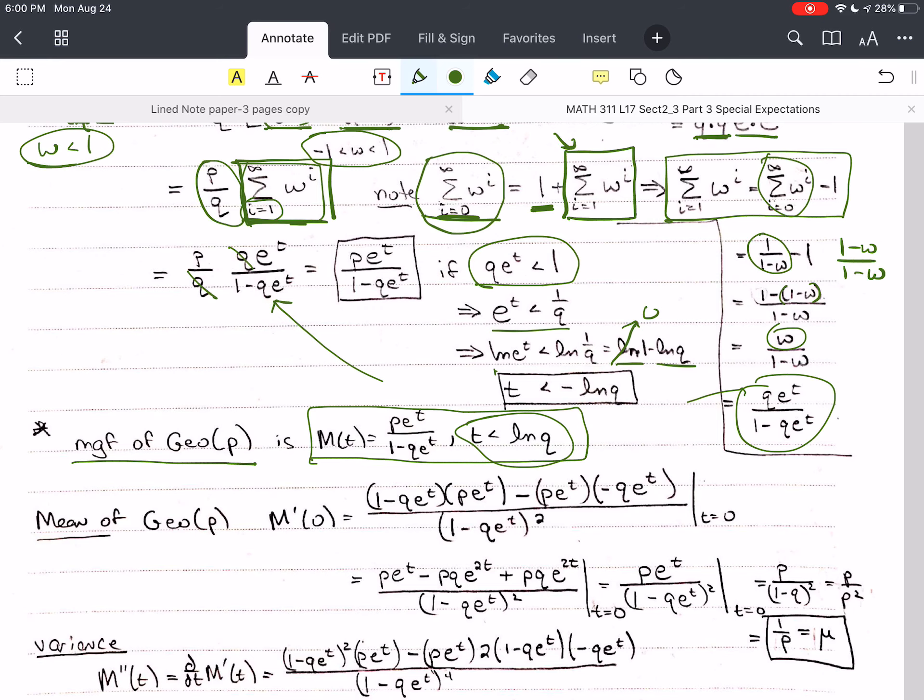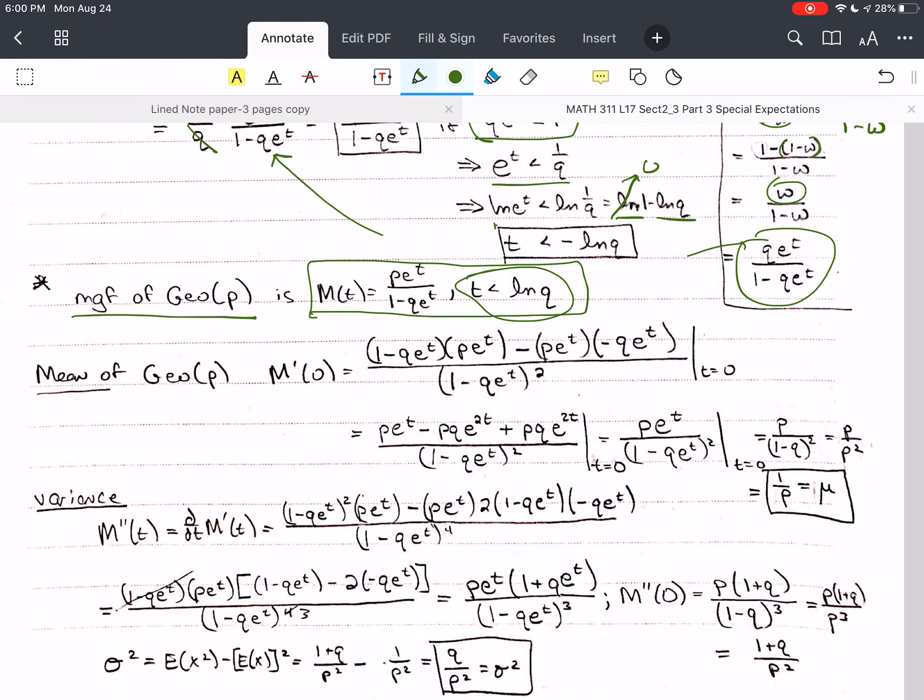The mean of the geometric function, we're going to use the moment generating technique here. So, we're going to take the derivative, but at 0. But, notice that I don't plug in 0 here. I take the derivative, and you know how to use the, I hope you know how to use the multiplication rule and the quotient rule. We're using the quotient rule here. The bottom times the derivative of the top minus the top times the derivative of the bottom. We are careful with our algebra, and then we get down to here, and here we plug in 0 for t. So, e to the 0 is 1. So, these become 1 here, and we're left with p over 1 minus q squared. Well, 1 minus q is p. So, I have p over p squared. One of those cancels out. The mean of the geometric is 1 over p. That's mu.